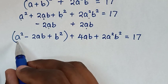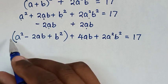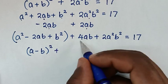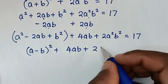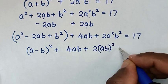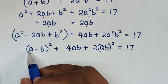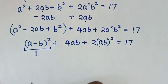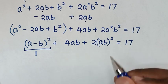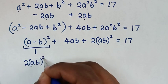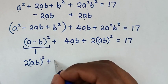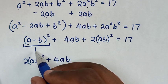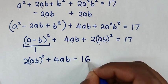From here, a² - 2ab + b² equals (a - b)², and 2a²b² = 2(ab)². So we have (a-b)² + 4ab + 2(ab)² = 17. Since a - b = 1, that is 1, so 1 + 4ab + 2(ab)² = 17. Taking 17 to the left side: 2(ab)² + 4ab + 1 - 17 = 0, which gives 2(ab)² + 4ab - 16 = 0.